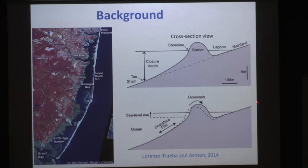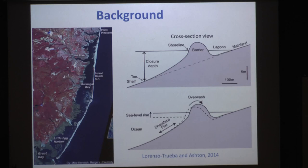Basically, barriers are moving in a conveyor belt fashion towards land. Despite earth scientists having studied barrier islands for many decades, there are still very fundamental questions we don't fully understand, such as: is there a threshold sea level rise rate beyond which barrier islands cannot keep up? What is the role of back barrier ecosystems on barrier response? And what is the effect of human activities on barrier response in the long term?